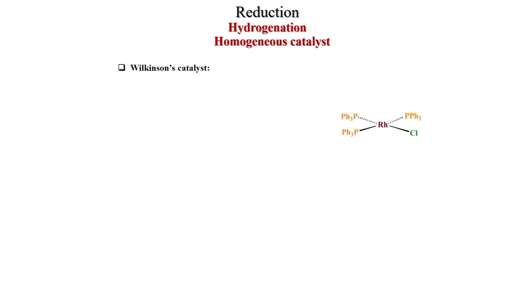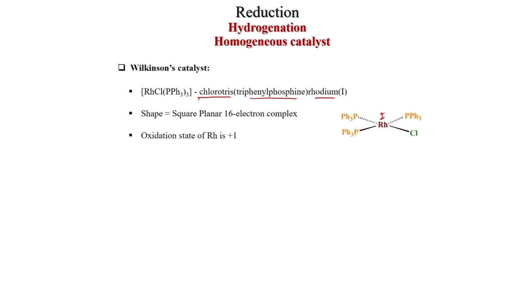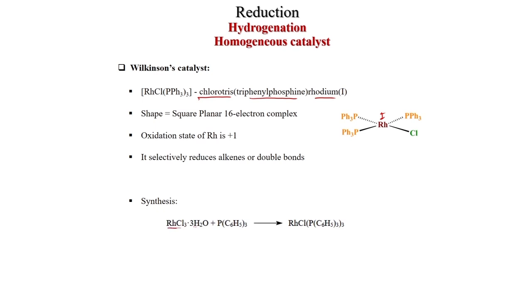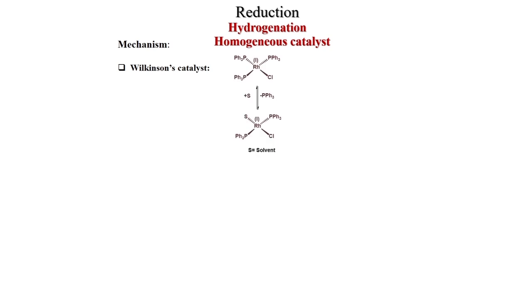Wilkinson's catalyst: this is chlorotris(triphenylphosphine)rhodium(I). The charge comes from chlorine, and it is a square planar 16-electron complex. The oxidation state of rhodium is +1. It selectively reduces alkenes (double bonds), which is its main application. Synthesis: RhCl3·3H2O with triphenylphosphine gives chlorotris(triphenylphosphine)rhodium — Wilkinson's catalyst.